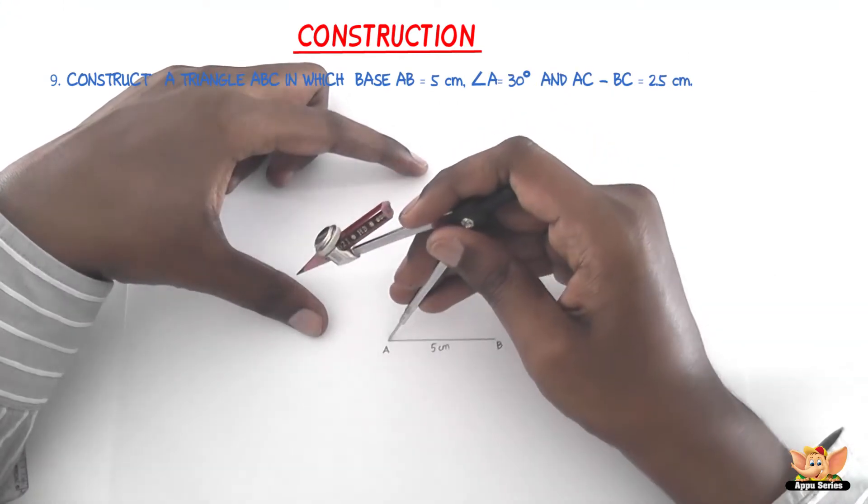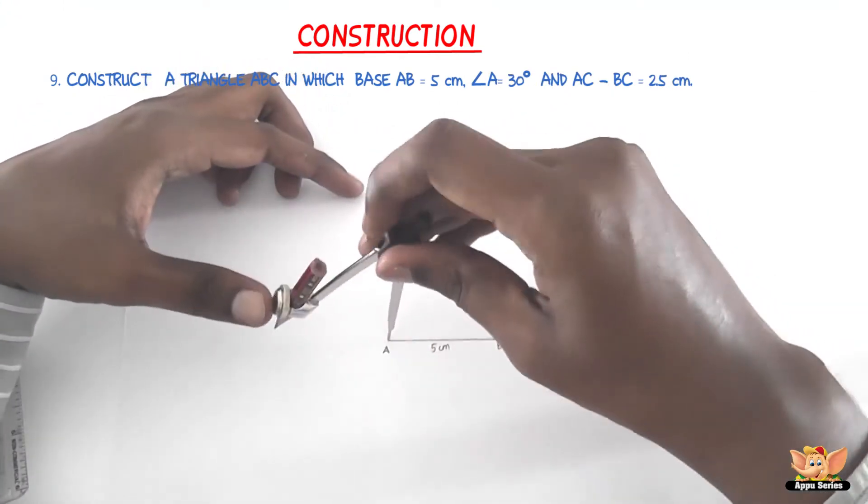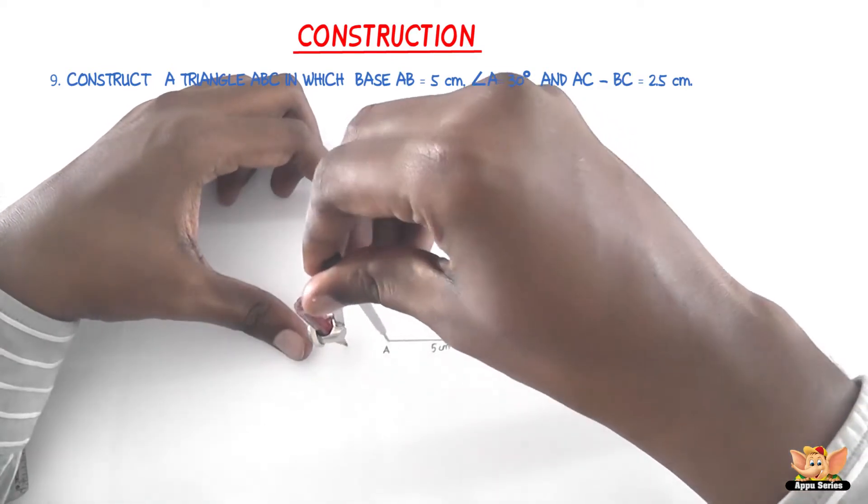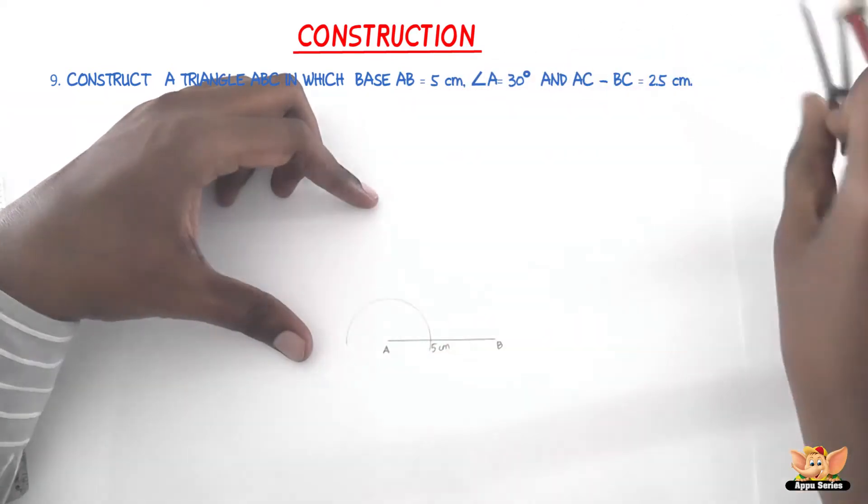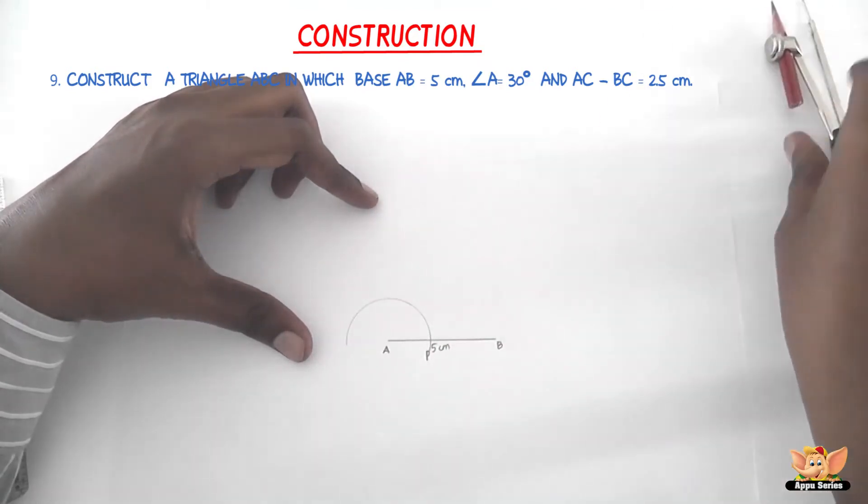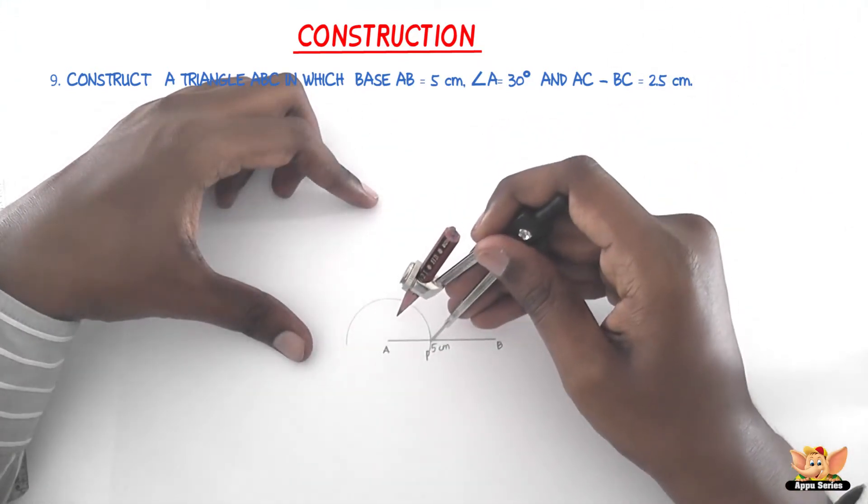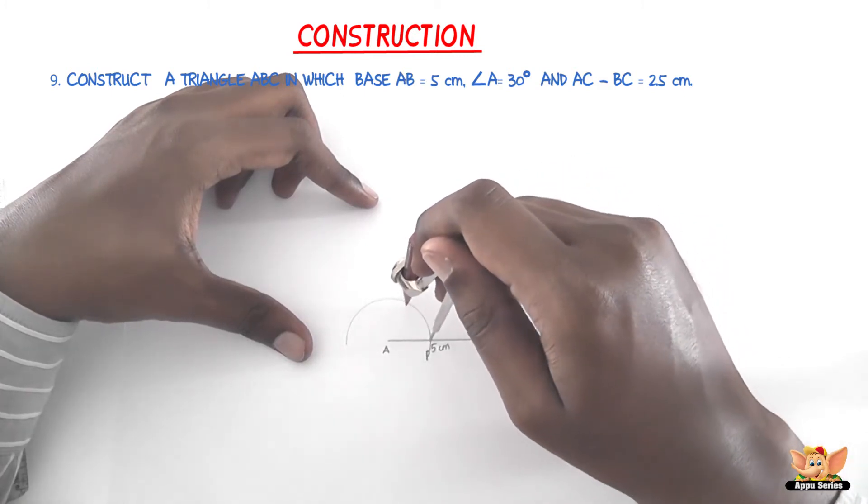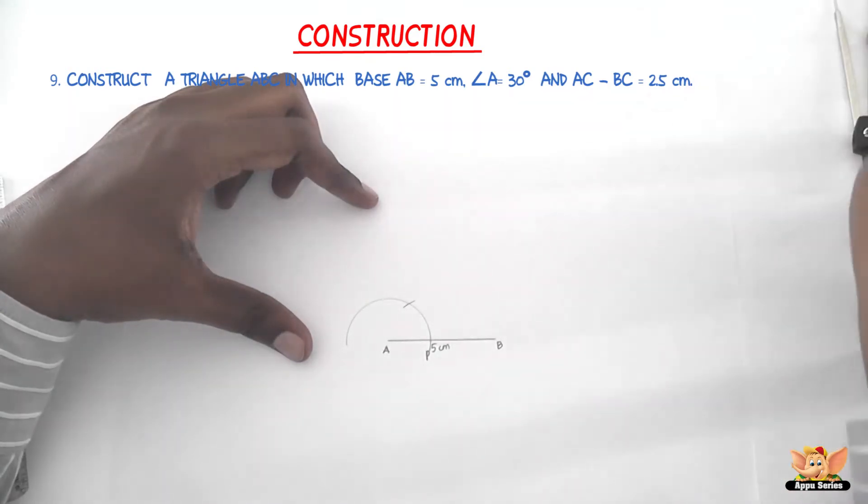With A as center and convenient radius, let us draw an arc such that it cuts AB at P. So here is P. Now with P as center and the same radius, let us cut an arc on the arc that we just drew and let us name it Q.